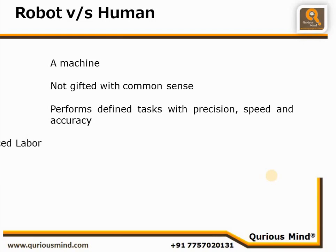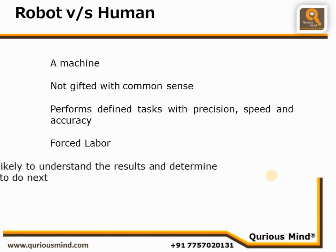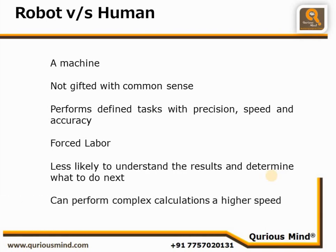A robot will listen to all orders of its creators. A human is more likely to understand results in advance and decide on the next action, whereas a robot will only perform pre-programmed actions. A robot can perform highly complex calculations with certain ease, which a human being may not.